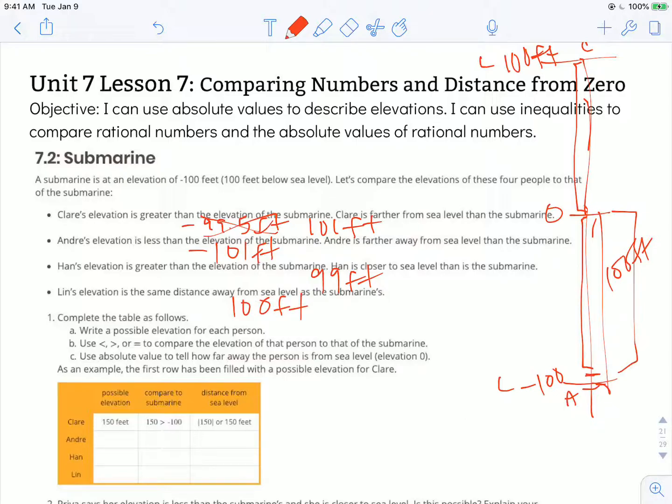Complete the table as follows. Of course, your values that you might come up with could be different than mine. There's an innumerable number of values that could be correct for these individuals. But we'll complete the table using the values I selected.